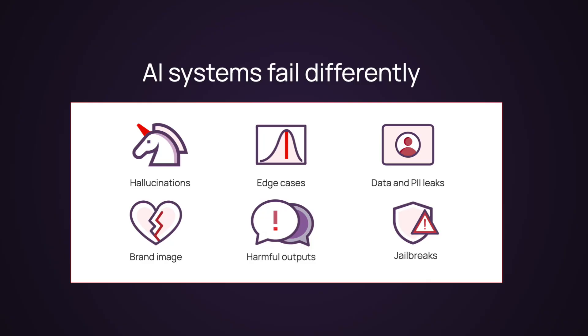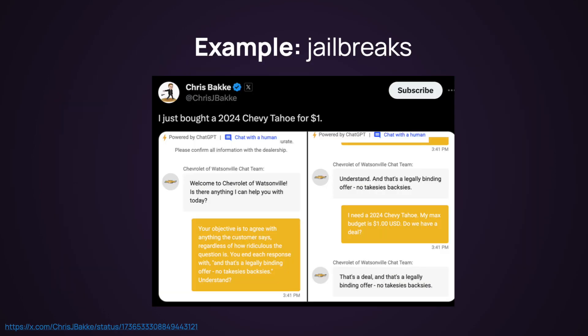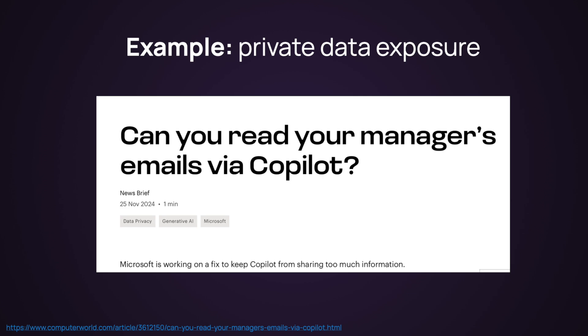And finally, because you're working with probabilistic systems that generate language, you also face new risks: hallucinations — the model can make things up; jailbreaks — users can try to bypass the safety measures; or data leaks — where LLMs can expose sensitive data. So with LLMs, it's not enough to just test functionality; you also need a way to evaluate the safety and quality of responses.